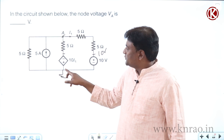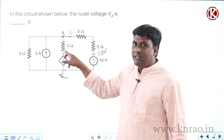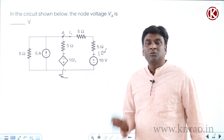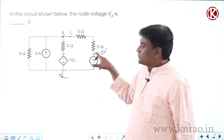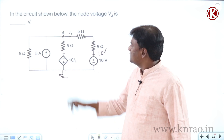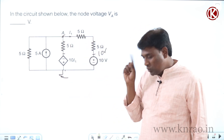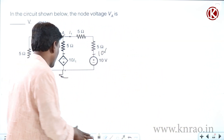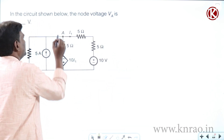If you go with nodal analysis and take this as reference, I need not apply KCL at the nodes where the voltage source is directly connected to reference. This node I need not consider, this node I need not consider — I only have to consider VA. So only one nodal equation and the problem is solved.